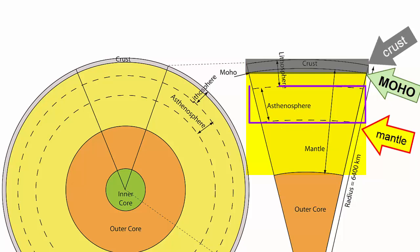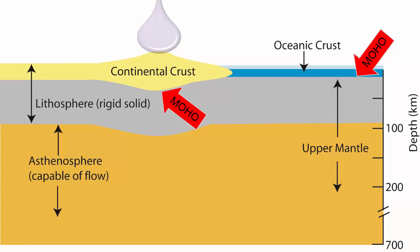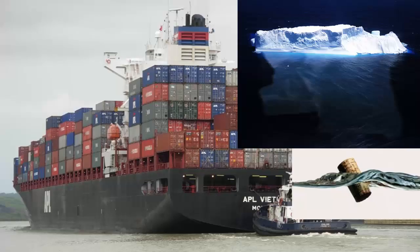Does the moho have anything to do with the asthenosphere? No. When we study the moho across the planet, it appears very close to the surface, at depths as low as 3 to 5 kilometers beneath the oceans. It appears as deep as 50 kilometers below the highest mountains. As material is added to or removed from the crust, it will adjust isostatically, again much like icebergs or ships in the ocean.